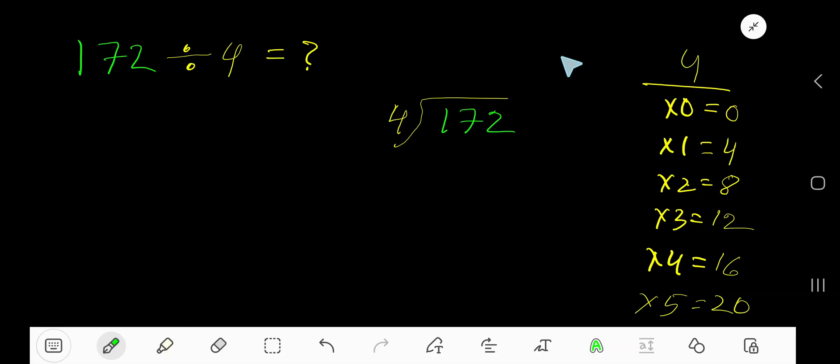172 divided by 4. Here 4 is a divisor, so we need the multiplication table of 4. 4 times 0 is 0, 4 times 1 is 4, 4 times 2 is 8. To find out the multiplication table of 4, just add 4 with the previous step: 0 plus 4 is 4, 4 plus 4 is 8, 8 plus 4 is 12, 12 plus 4 is 16.